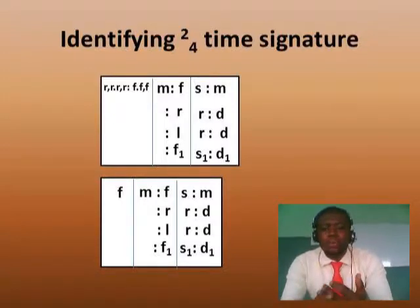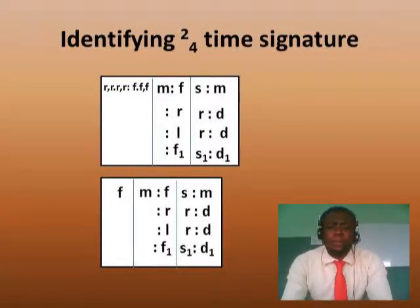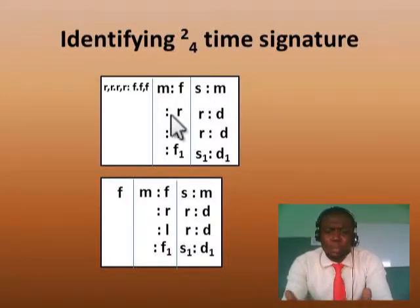Identifying two-four time signature: how do you identify music scores that are written in two-four time signature, assuming it is not written down clearly for you to see? How do you find out that this copy is in two-four time signature? Now, from our previous lesson, I can remember we studied how to identify time signatures. The same rules, the same principles apply here.